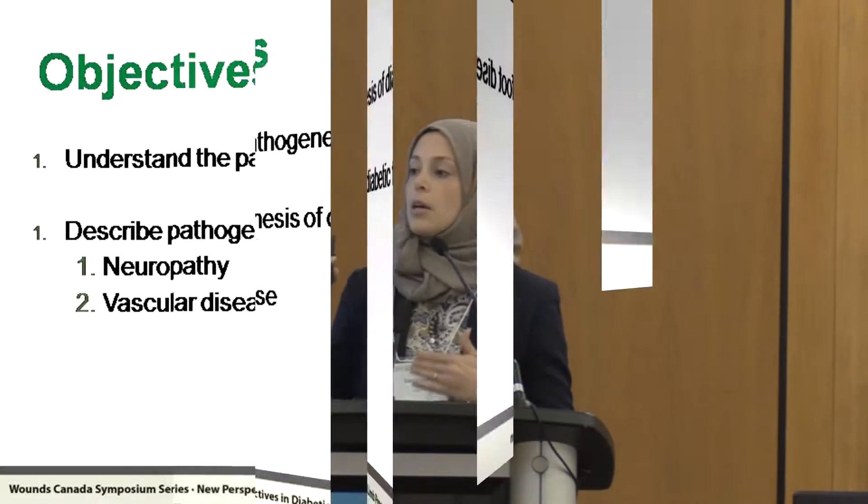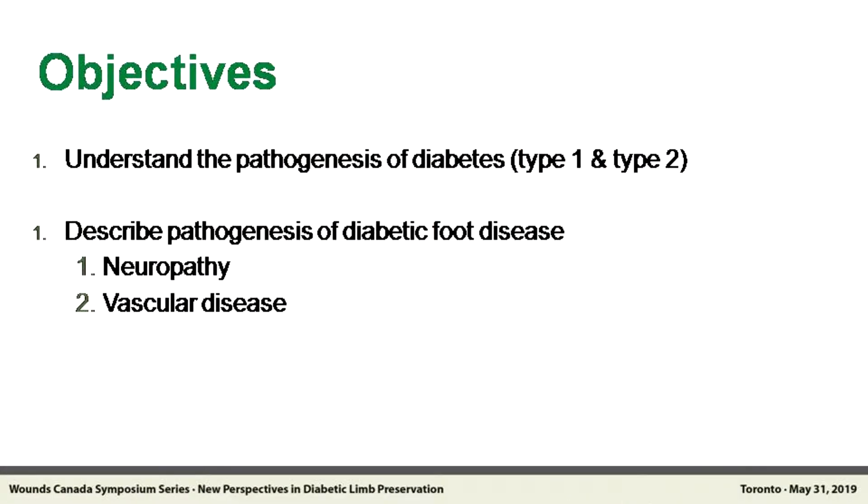I'm going to cover the pathogenesis of diabetes and highlight the distinction between type 1 and type 2 diabetes, and then cover the pathogenesis of diabetic foot disease. We're really going to focus on the two bases of pathogenesis: peripheral neuropathy and peripheral arterial disease, or vascular disease.